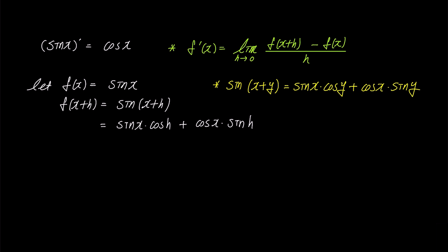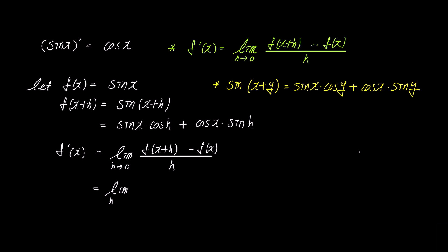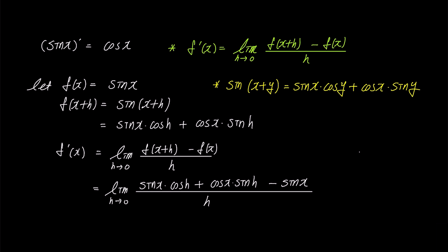Now let's substitute the expressions for f of x and f of x plus h into the derivative formula: f prime of x is the limit as h approaches 0 of f of x plus h minus f of x over h. When we do this, the numerator becomes sine x times cosine h plus cosine x times sine h minus sine x, and the denominator is h.